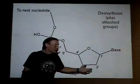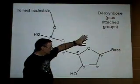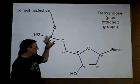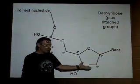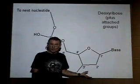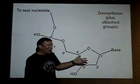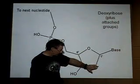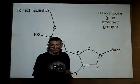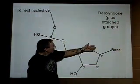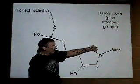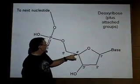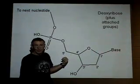First, let's talk about the terminology. Here we have a nucleotide: a base, sugar, and phosphate. The sugar in this case is deoxyribose — this would be in DNA. If we were looking at RNA, we'd have ribose, which would be different only by having a hydroxyl group here. We number the 5 carbons in the sugar: 1 prime, 2 prime, 3 prime, 4 prime, and the one outside the ring is 5 prime.